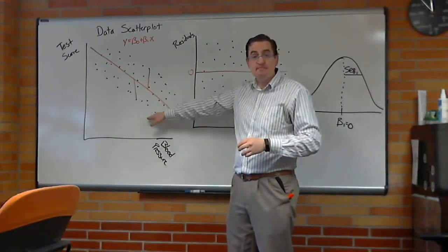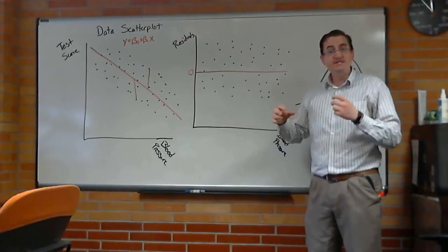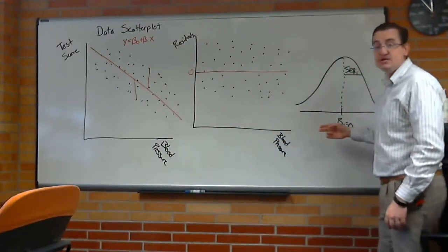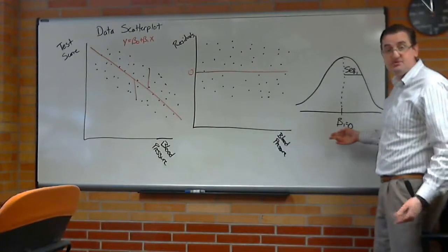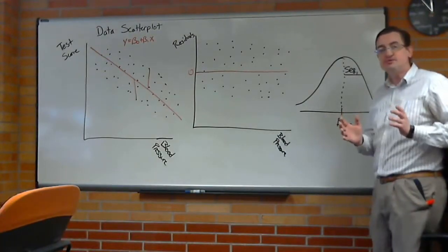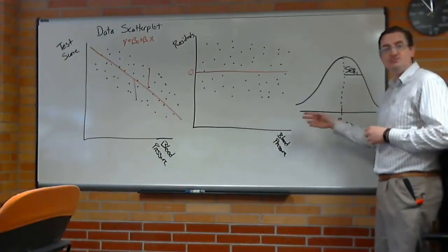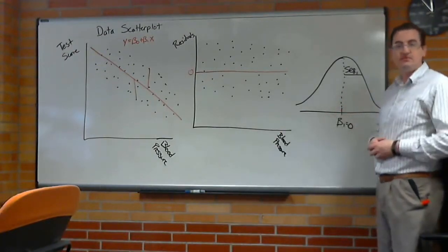But when we talk regression, we could look at pictures of the actual data, we could look at pictures of the error of the data around the regression line, and we can look at the sampling distribution for the slope, which is where we get our p-value. Keeping those three pictures separate is tricky, but it's important to understand them because we'll be looking at all of them in their own terms.